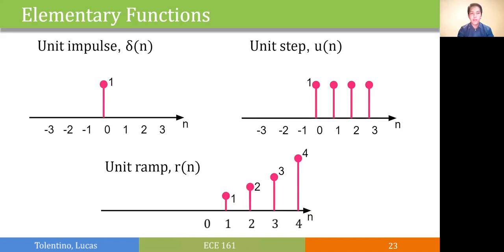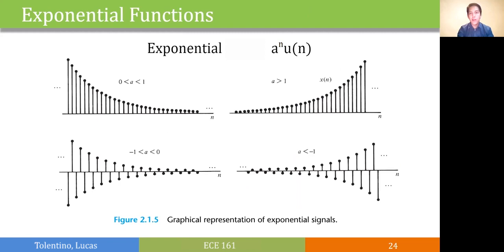We also have the exponentially decaying functions denoted by a to the n u of n. Depending on the value of a, for example if a is greater than 1, we have an exponentially increasing signal. If a is between 0 and 1, we have an exponentially decaying signal. If a is less than negative 1, we have an oscillating and exponentially increasing signal. And if a is between 0 and negative 1, we have an oscillating and exponentially decreasing signal.